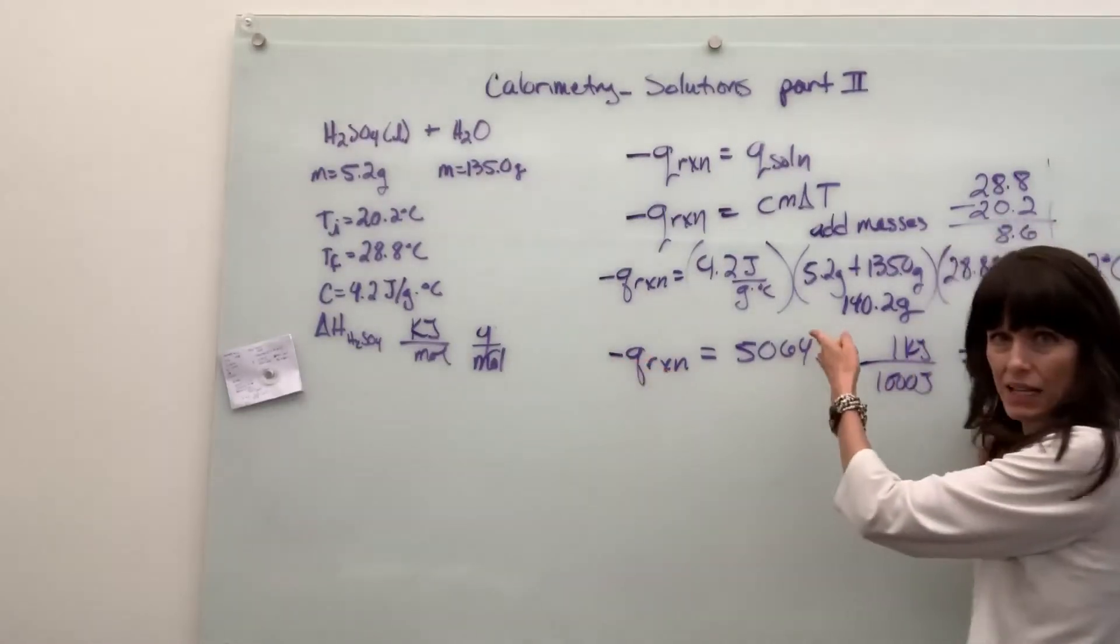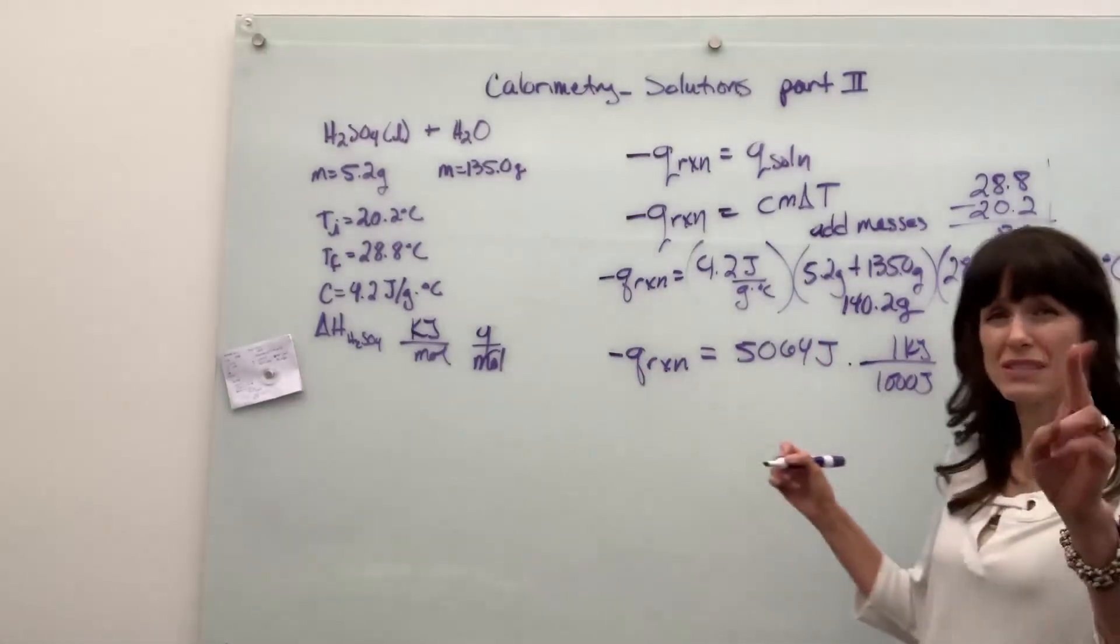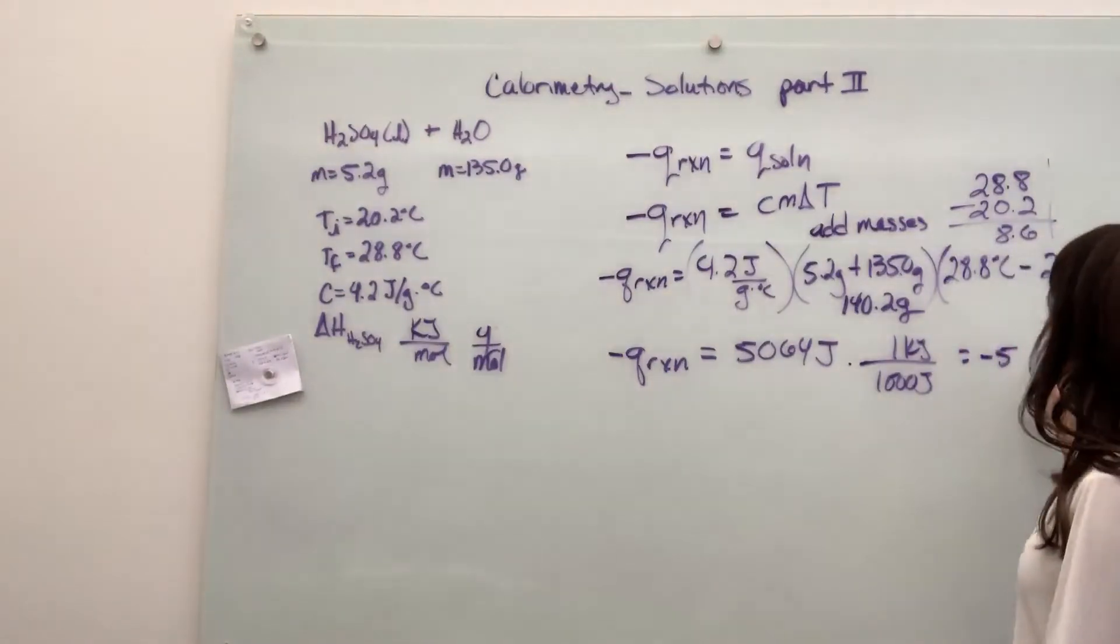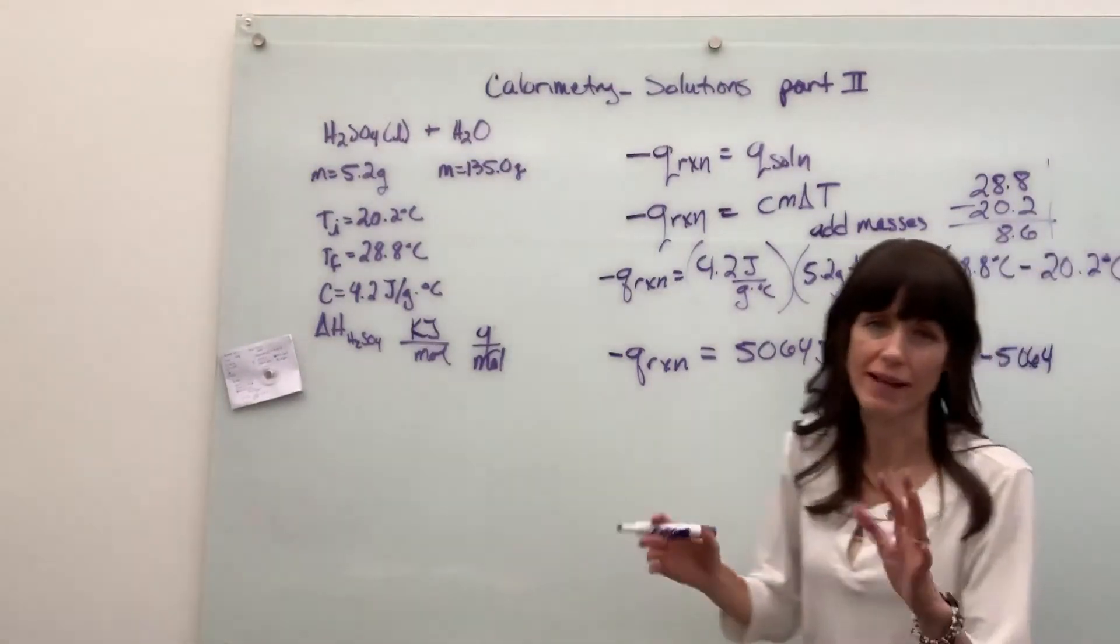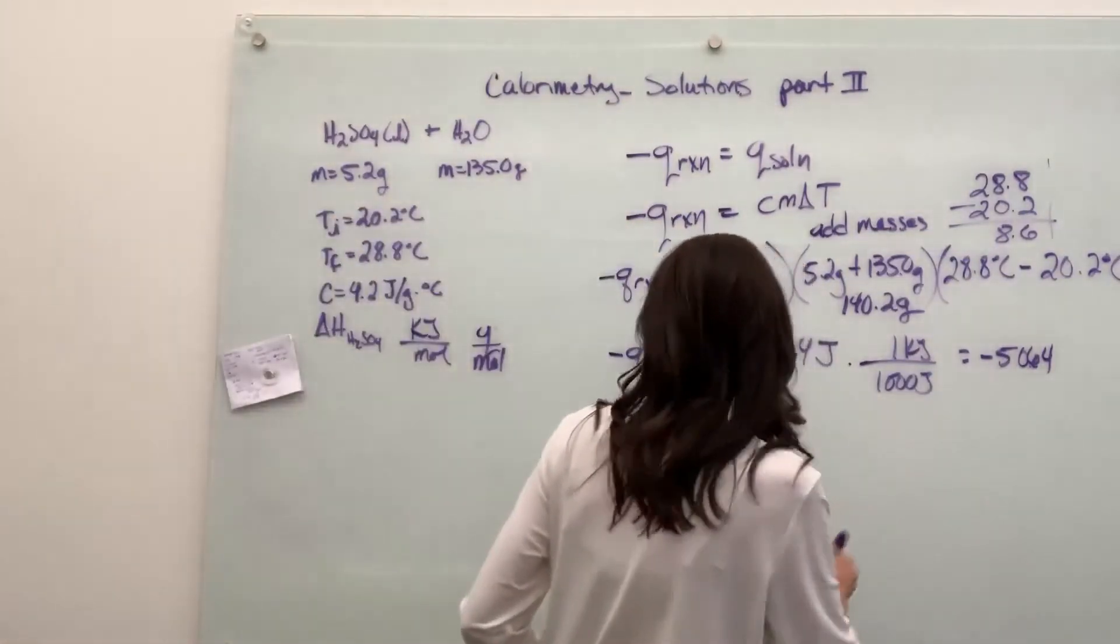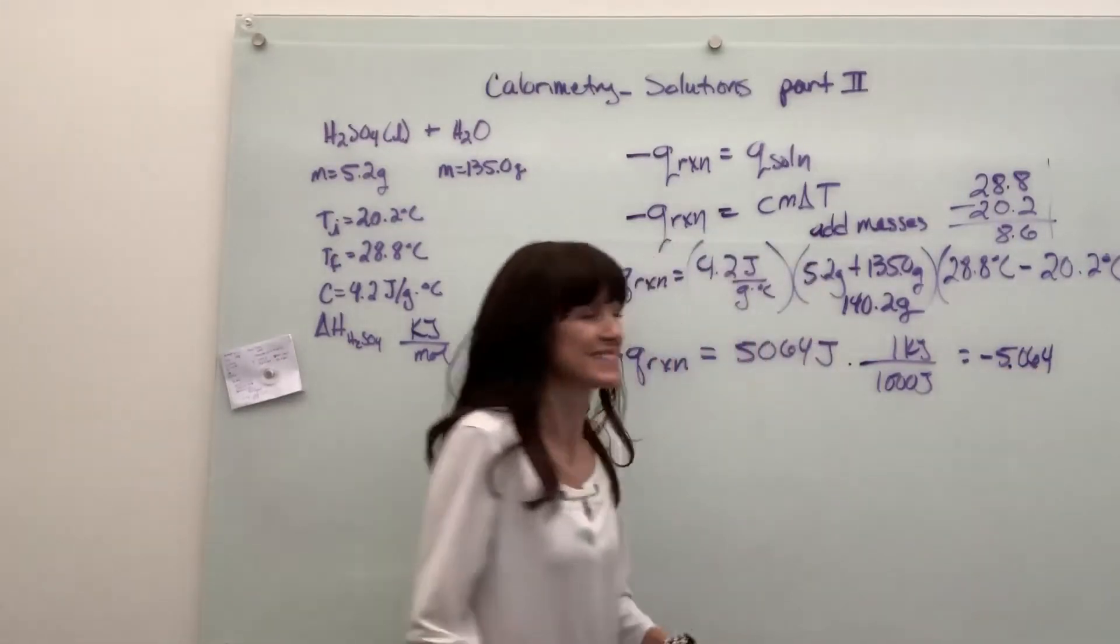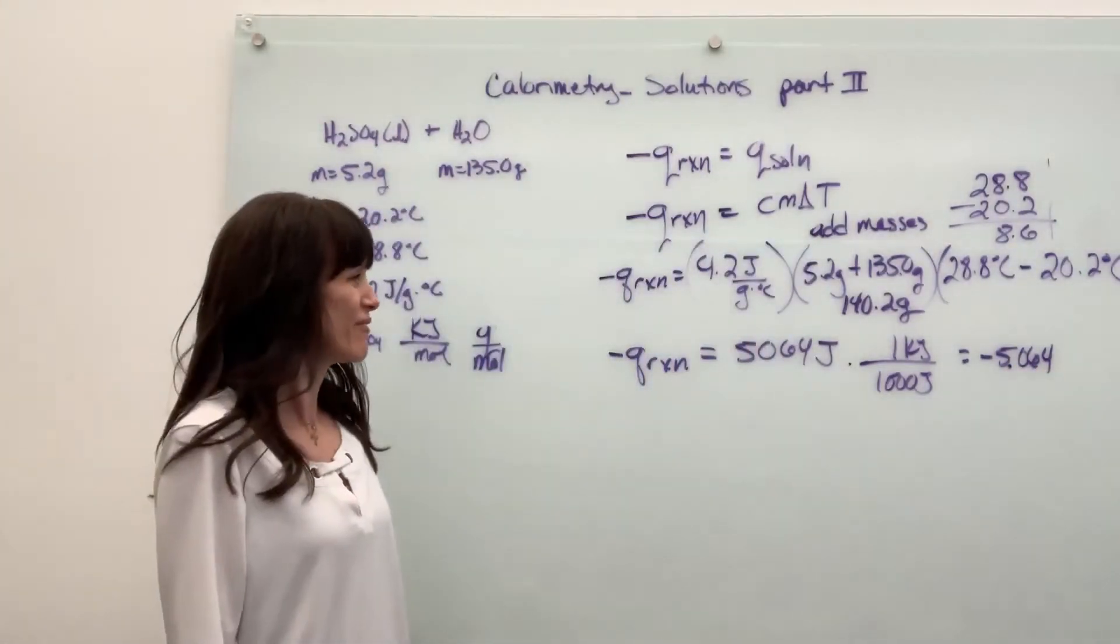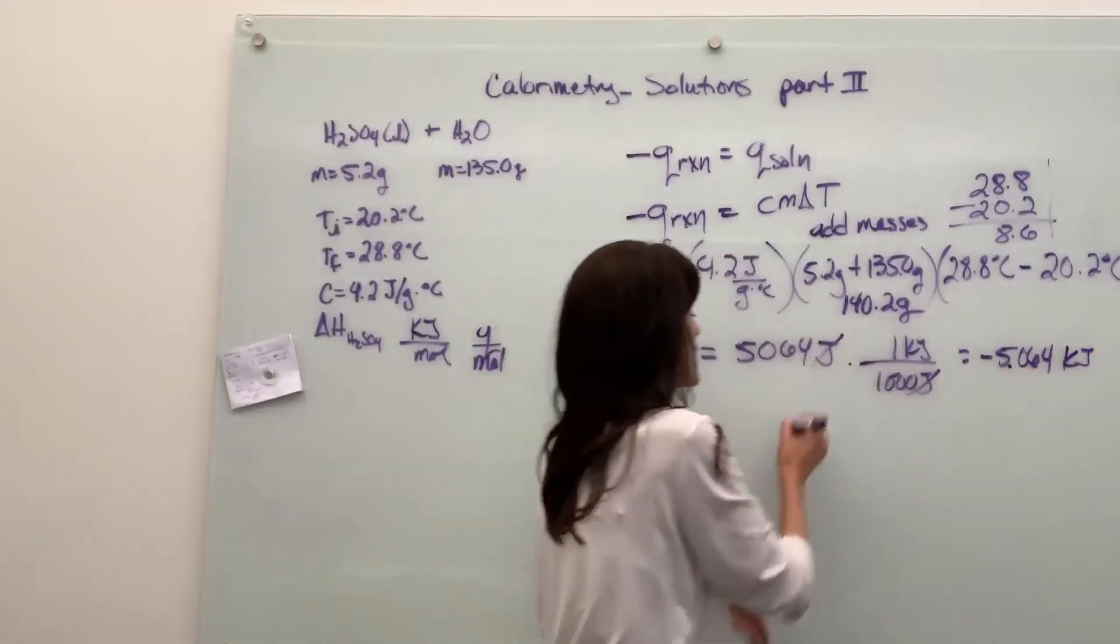There are a thousand joules in one kilojoule. I'm going to go ahead and bring the negative over as well. That will give us negative 50. Actually, negative 50.64. We have to divide, so I'll carry it just another step further. I'm so sorry. I put the decimal in the wrong place. That's 5.064. So negative 5.064 kilojoules.